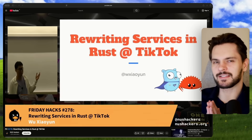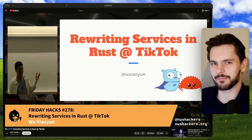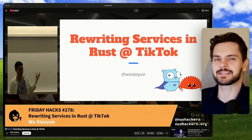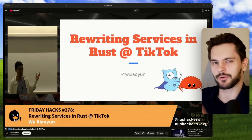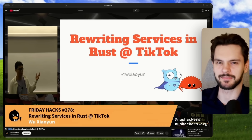TikTok just saved itself $300,000 a year because an intern decided to rewrite a critical Go service in Rust instead. But the most interesting part isn't just the rewrite — it's what the intern discovered about Rust's strengths, its limitations, and when it makes sense to use Rust instead of Go in production.